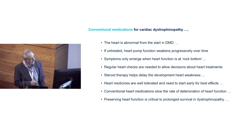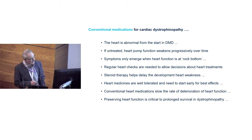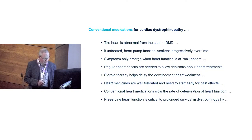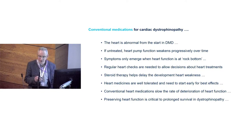I want to spend the rest of the time talking about conventional medications. This is a one-slide summary of what we know. The heart is abnormal from the start in Duchenne dystrophy — from before birth. If untreated, you develop a progressive cardiomyopathy. Symptoms only emerge when the heart function is at rock bottom. Therefore, you need regular heart checks to detect what's going on and to know when best to intervene.